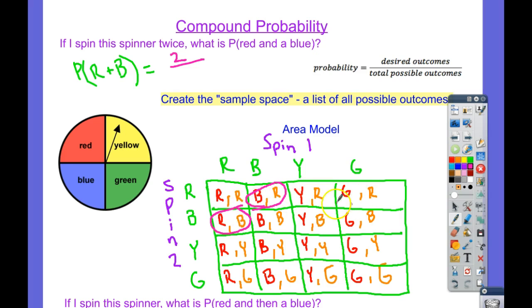So that's two desired outcomes over all the possible outcomes, which is how many? Well, one, two, three, four by one, two, three, four. That's 16 possible here. There's 16 possible. So two out of 16 is one out of eight. There's the probability that I get a red and a blue.